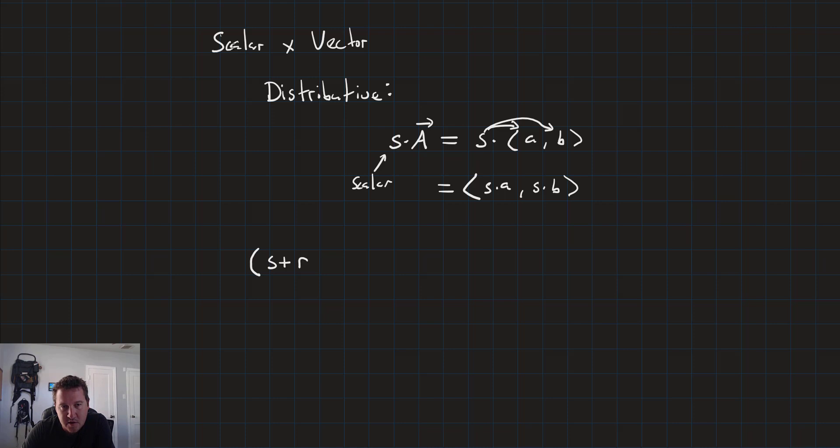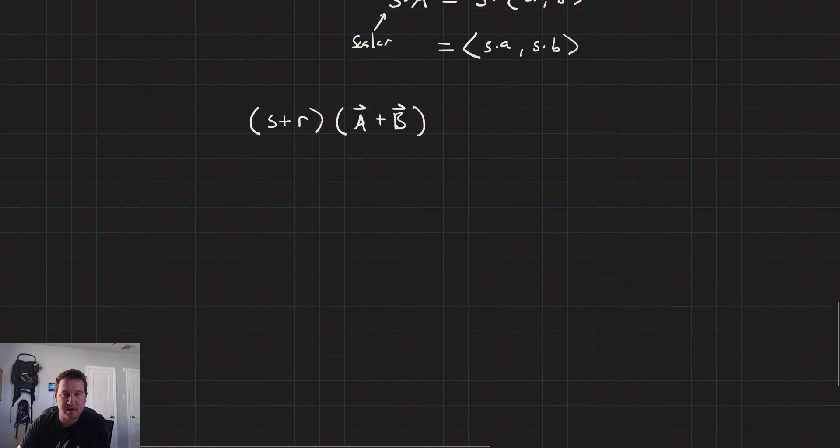Also if we have a bunch of different things, say we have the sum of two scalars, s plus r, times the sum of two vectors, vector a plus vector b. We can FOIL this to get the same result. So this is going to equal s times vector a plus s times vector b plus r times vector a plus r times vector b. And then s distributes into the components of a and b and so on, and then we add them all up and get our results.